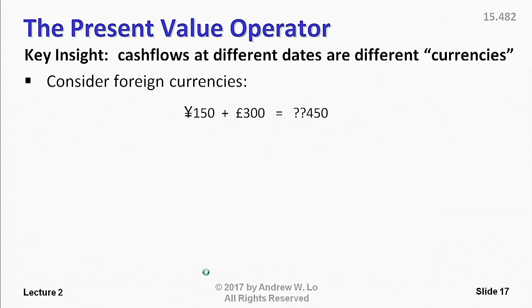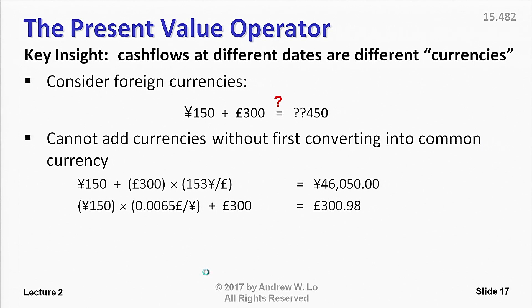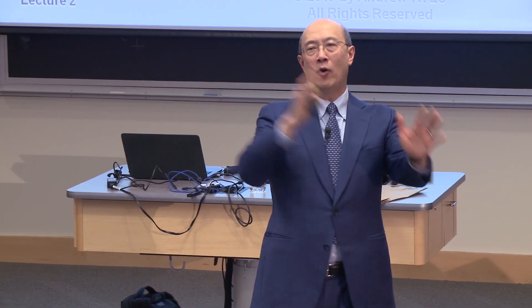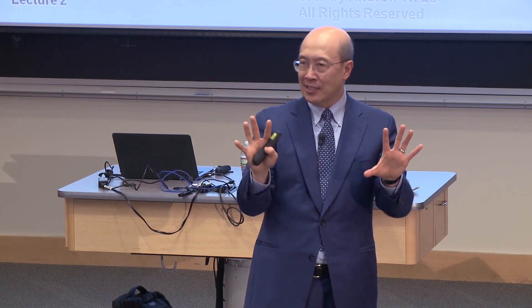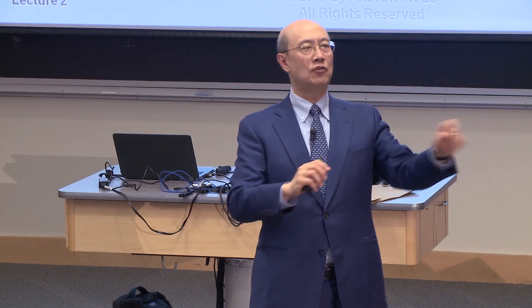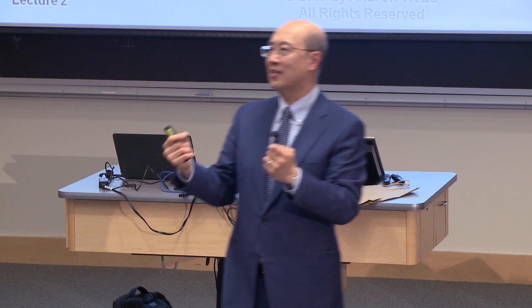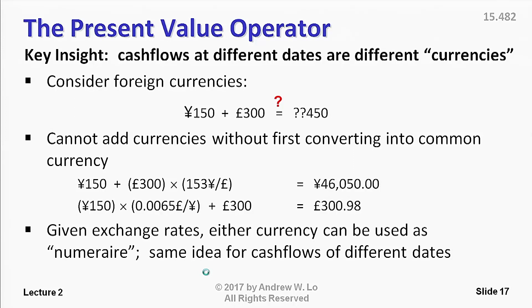That's the point. You can't add them because they're in different units. You actually have to convert either yen to pounds or pounds to yen, and then you can add them and make meaning. That's exactly the way you ought to think about cash flows at different points in time. You need to have an allergic reaction when you see people adding $20 million today to $60 million next year to get $80 million. That $80 million should give you as much discomfort as the $450 example.